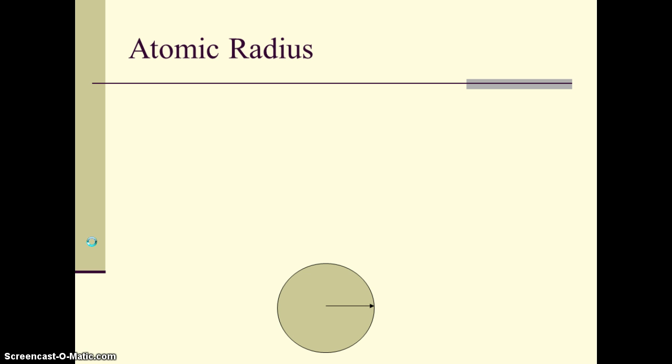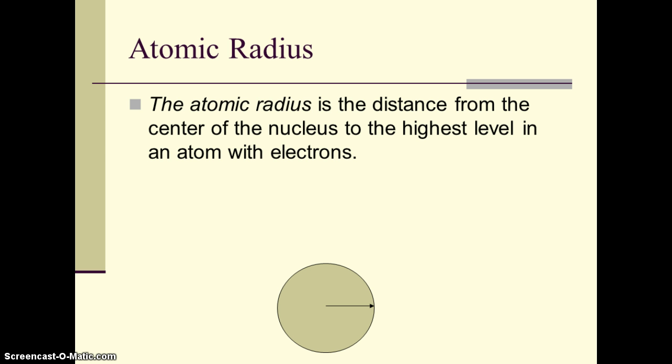The first term we're going to discuss today is atomic radius, which really reflects the distance from the center of the nucleus to the outside edge of the atom. And we define that outside edge by the highest level that actually has electrons in it. The problem with this definition for atomic radius is it's not practical from a measurement standpoint.